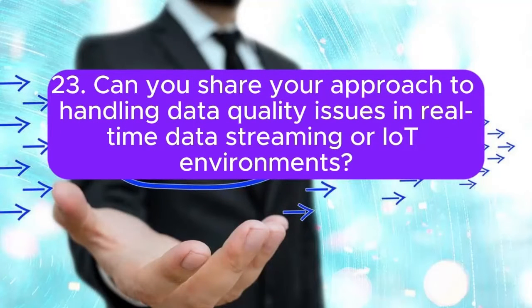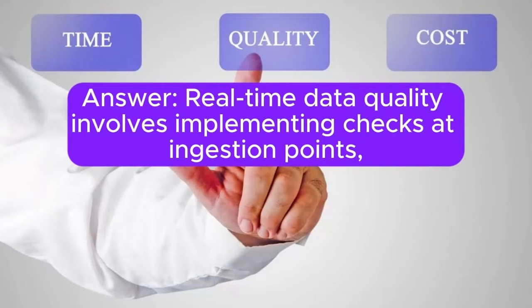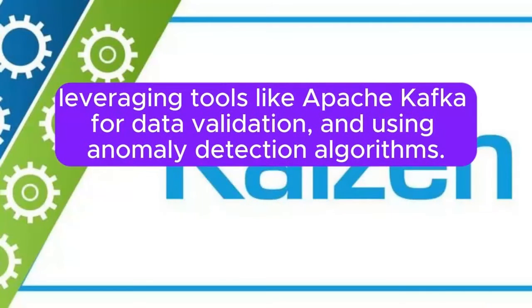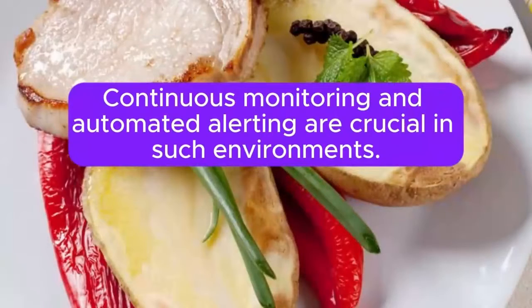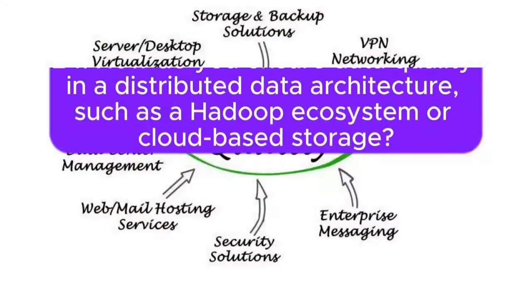23. Can you share your approach to handling data quality issues in real-time data streaming or IoT environments? Answer: Real-time data quality involves implementing checks at ingestion points, leveraging tools like Apache Kafka for data validation, and using anomaly detection algorithms. Continuous monitoring and automated alerting are crucial in such environments.